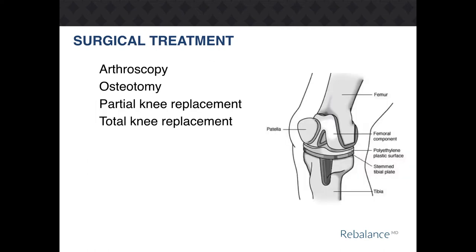The surgical treatments may include arthroscopy, osteotomy, partial knee replacement, and total knee replacement. Knee replacement surgery involves an orthopedic surgeon replacing your diseased knee joint with an artificial prosthesis. The ends of the femur and tibia are cut to eliminate roughness. The ends of these bones are covered with a metal surface separated by a plastic liner in order to create a new joint.